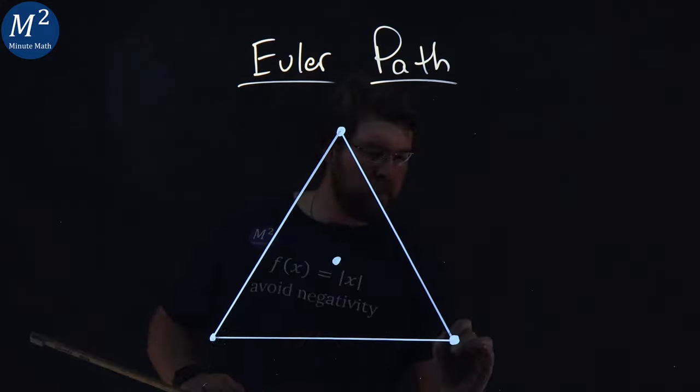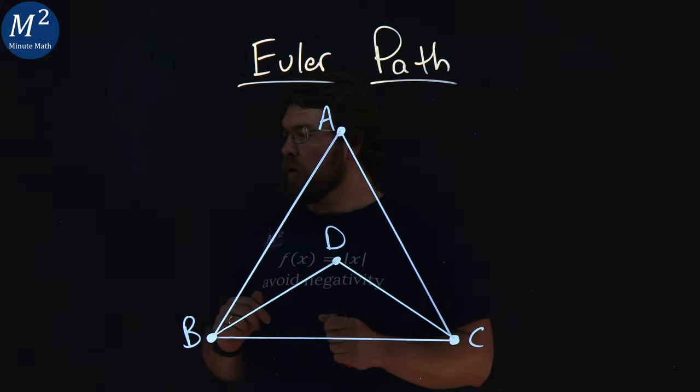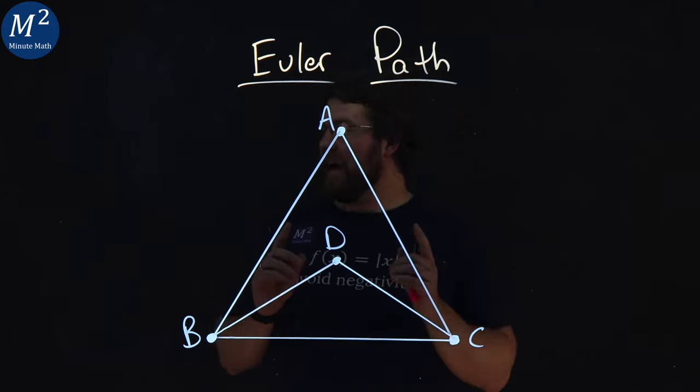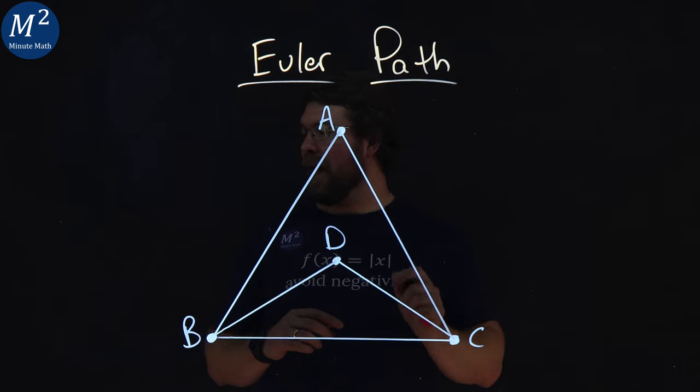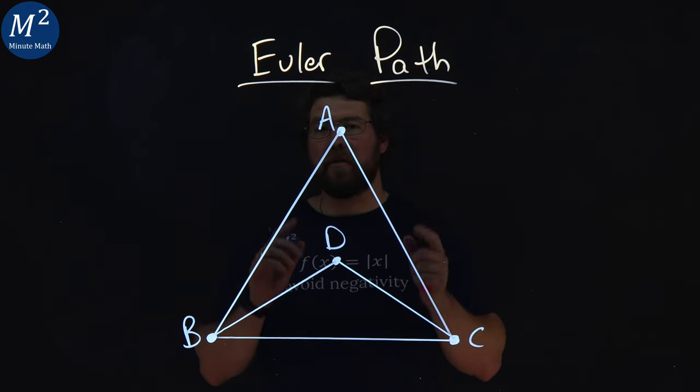What is an Euler path? An Euler path is a path that uses every edge in a graph with no repeats. Being a path, it does not have to return to the starting vertex.